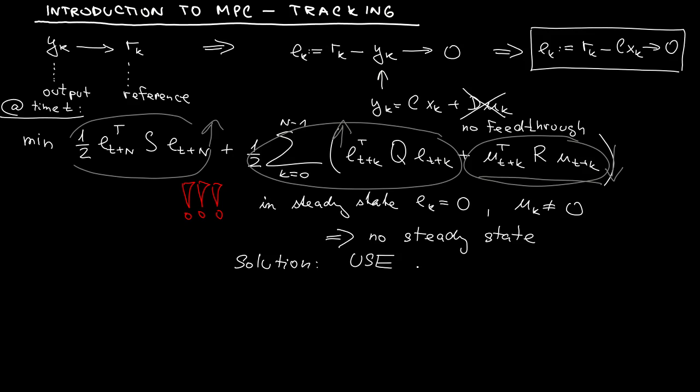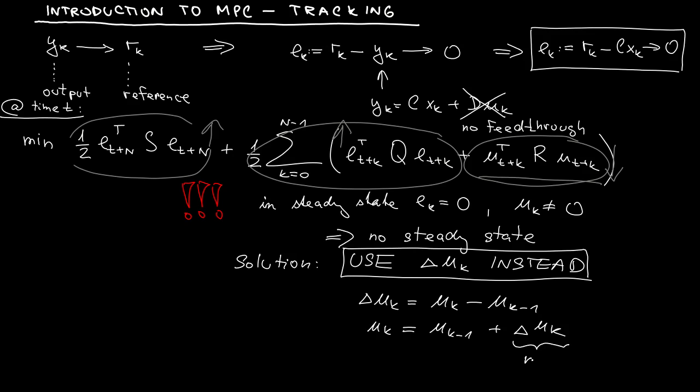What's the solution? The solution is to use the increment of control signal instead of the control signal itself in your model. The control increment is defined as u_k minus u_{k-1}. That means the value of the control signal minus the value of the control signal in the previous time step. Now if I reformulate this I can express my control signal at time k as the control signal at the previous time step plus the increment. Now the increment is regarded as the new control signal whereas the value of the control in the previous time step is our new state variable.